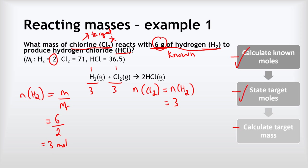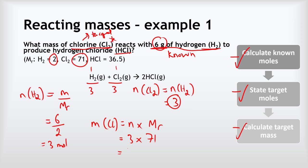Now we calculate the target mass. The mass of chlorine equals the number of moles multiplied by its Mr. The number of moles of chlorine is 3, multiplied by its Mr of 71, giving a final answer of 213 grams. To recap: we found the moles of the known substance, determined the moles of the target, then found the mass of the target.